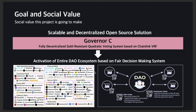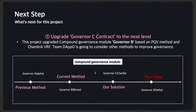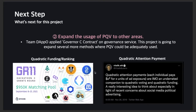We want to make more people engage in healthy governance and community. Before I finish my presentation, I want to show next steps for this project. First, we are going to upgrade the Governor C contract to the next level. Our open-source project improved the Compound Governance Module Governor B based on PQV and Chainlink VRF. This team is going to study other methods, which could be Governor D, to further improve the governance system. Second, this project wants to expand the usage of PQV to other areas, such as quadratic funding, quadratic ranking, and quadratic attention payments.